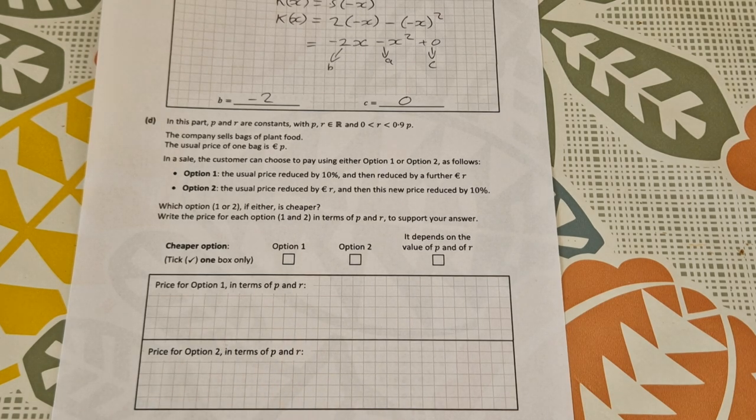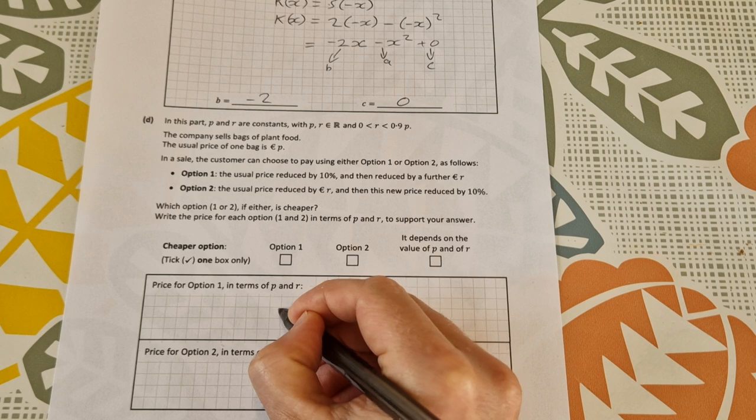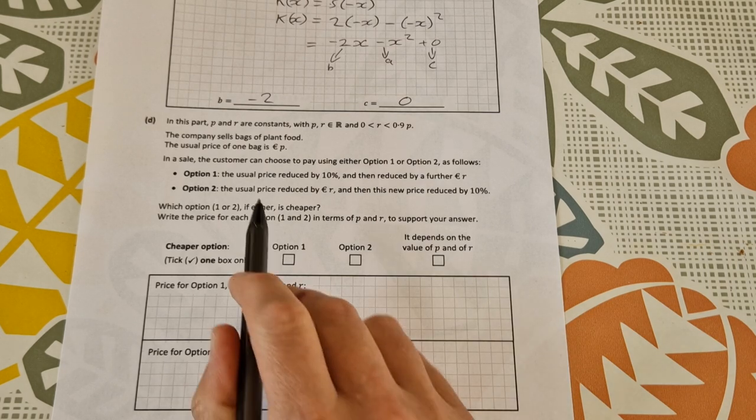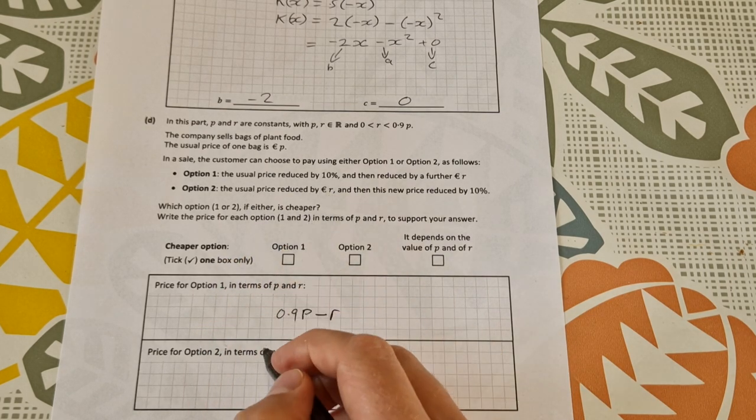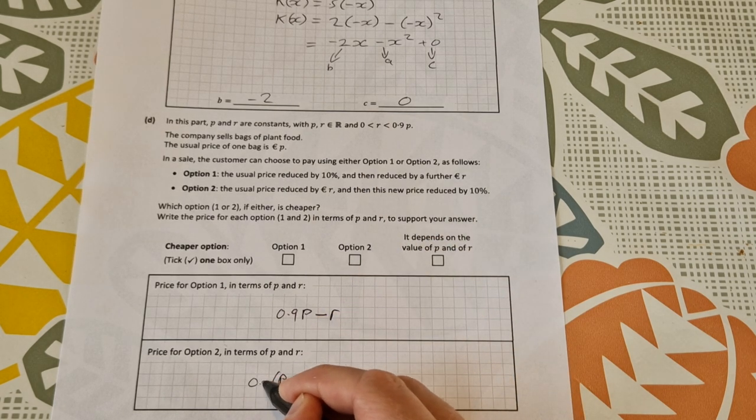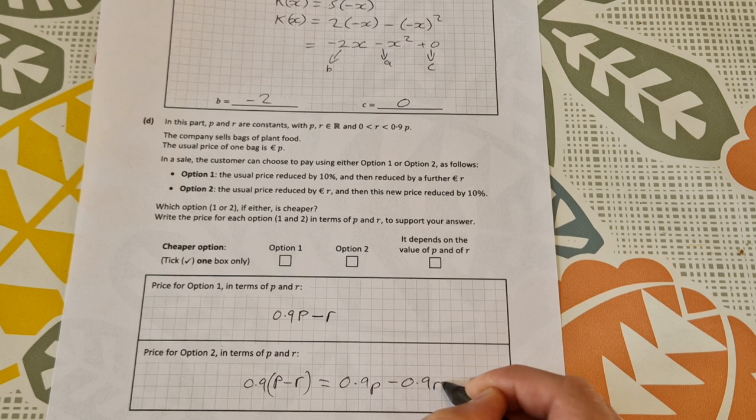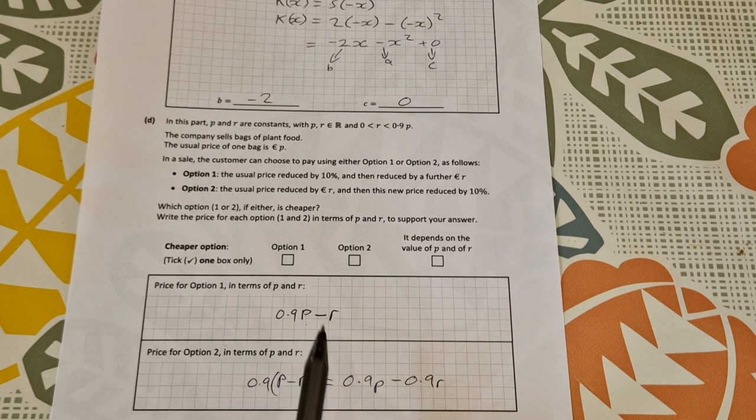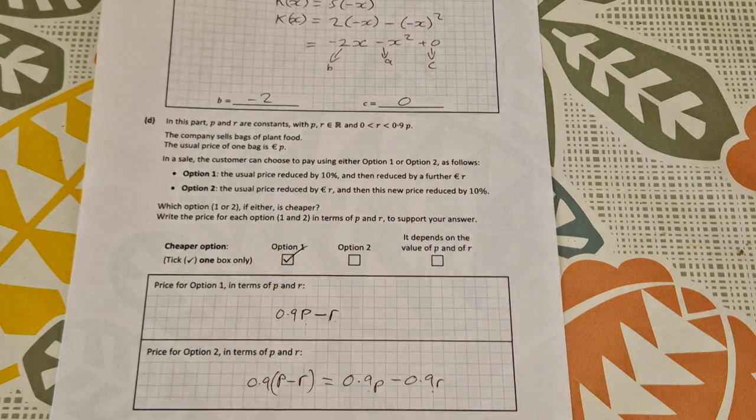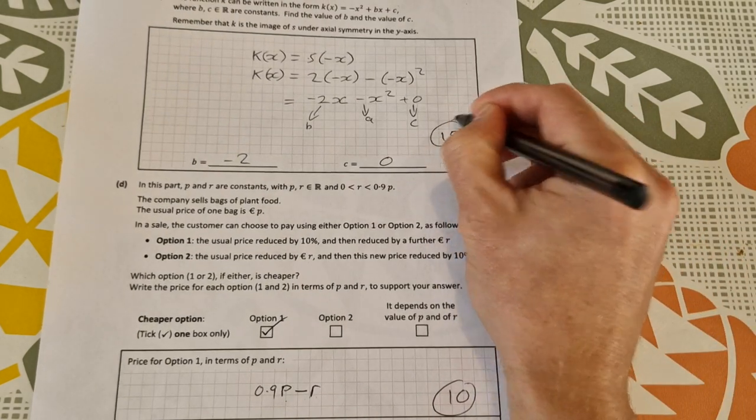So let's do option one and option two. Option one: the usual price reduced by 10%, so that's p reduced by 10% is 0.9p, and then reduced by r euro, so minus r. For option two, the usual price reduced by r euro, so p minus r, and then reduced by 10%, so multiplied by 0.9. That's equal to 0.9p minus 0.9r. So which is better? 0.9p minus r or 0.9p minus 0.9r? Well, option one is obviously cheaper, so option one is the answer. That's for 10 marks, and the one up here, sorry, just forgot to write the marks, was 15 marks.